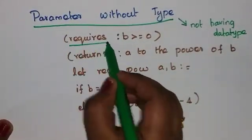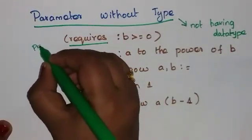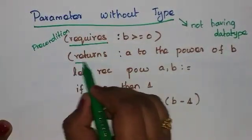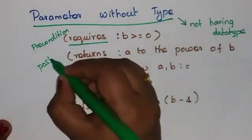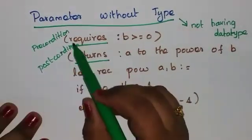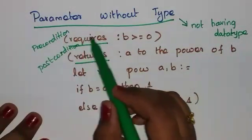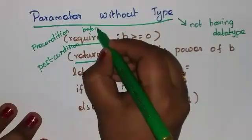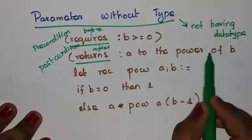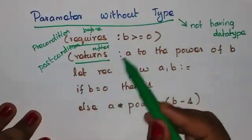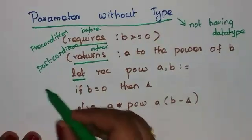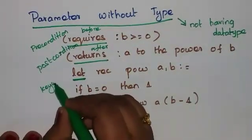Here, 'requires' means precondition. You have to execute this precondition before the execution of the function, and the post condition after the execution of the function. So precondition and post condition are given. 'Let' is a keyword — a reserved word.